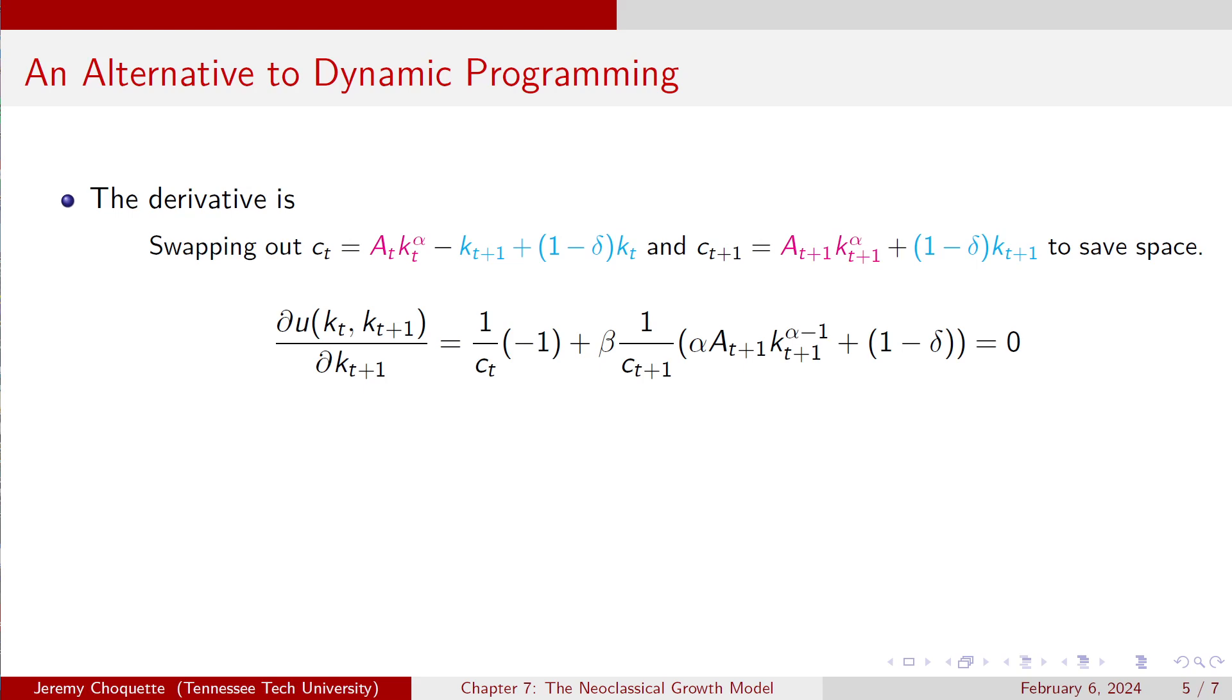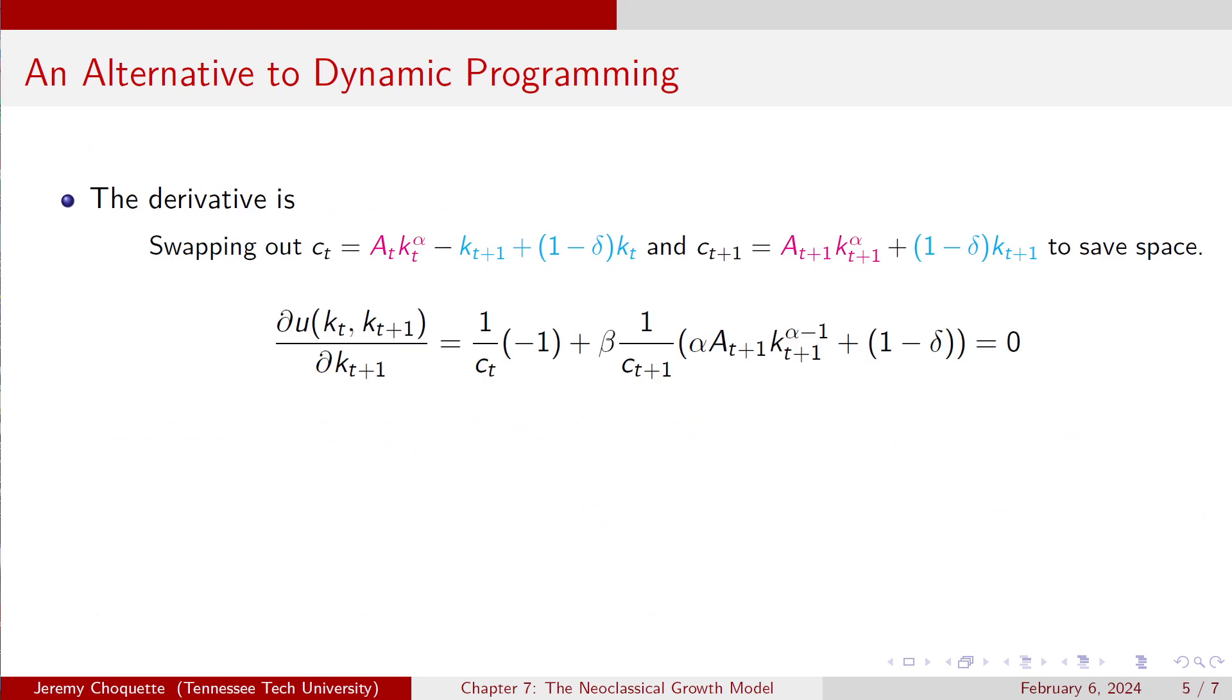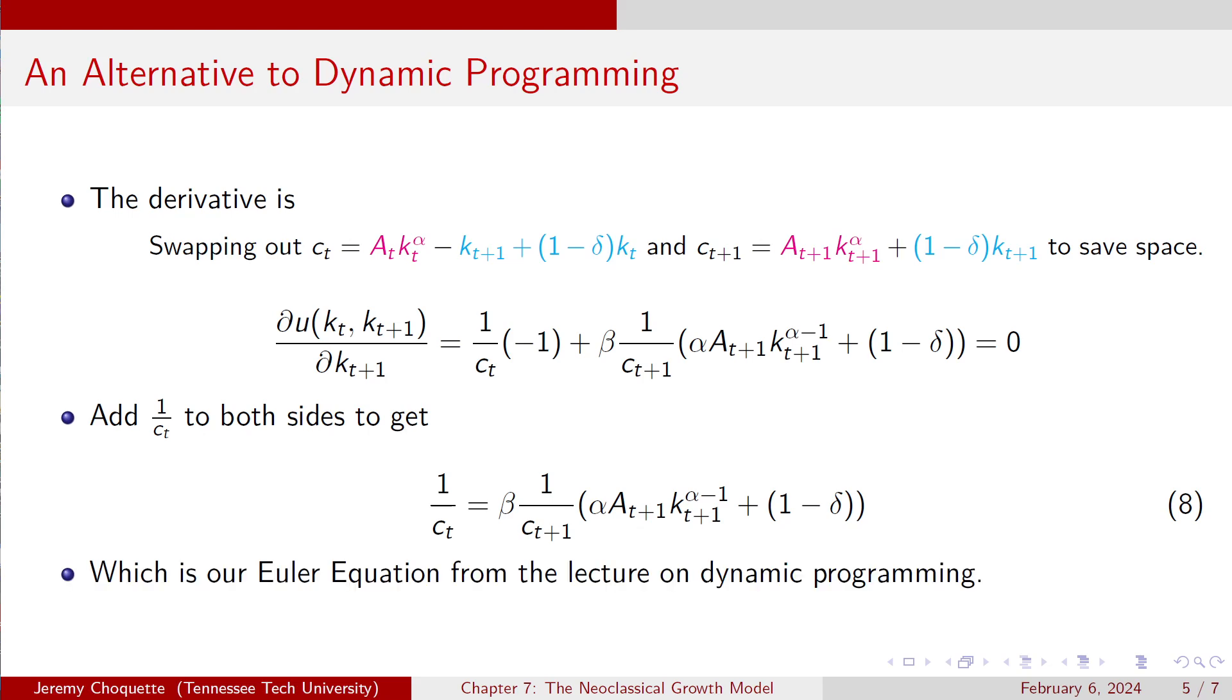So I get partial of u of kt and kt plus 1 with respect to kt plus 1 equals 1 over ct times negative 1 plus beta times 1 over ct plus 1 times alpha times at plus 1 times kt plus 1 to the alpha minus 1 plus 1 minus delta. And that equals 0. Okay, so you just get your two constraints, right? And you plug them in for ct and ct plus 1. And then you just take one derivative across the board with respect to kt plus 1. And that gives you this right here. You set that equal to 0, right? You add 1 over ct to both sides, and that gives you equation 8, which is exactly the Euler equation you saw in the first lecture of this chapter, right? It's the Euler equation from dynamic programming stuff that we saw.